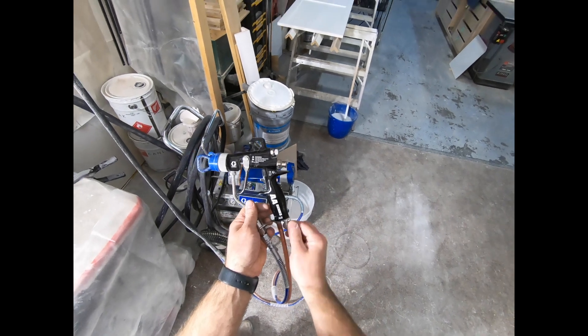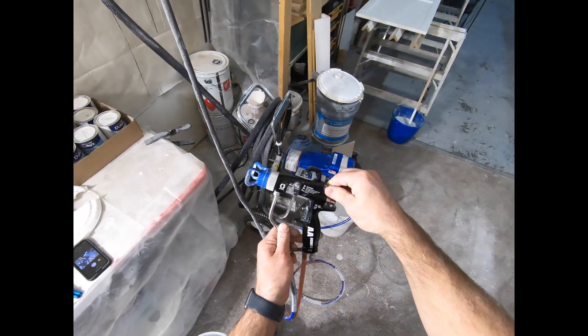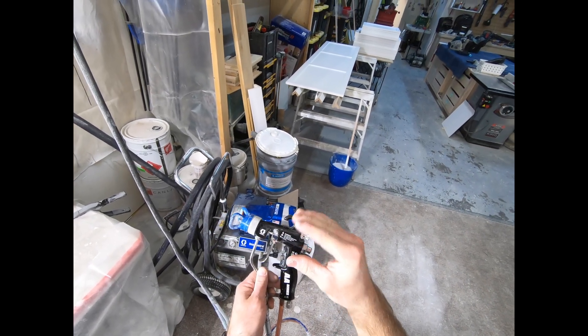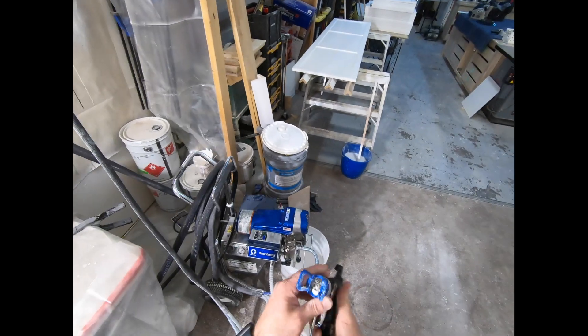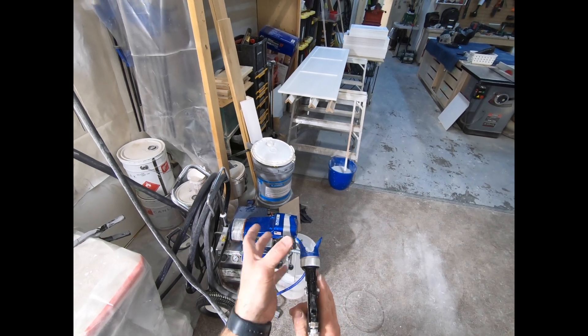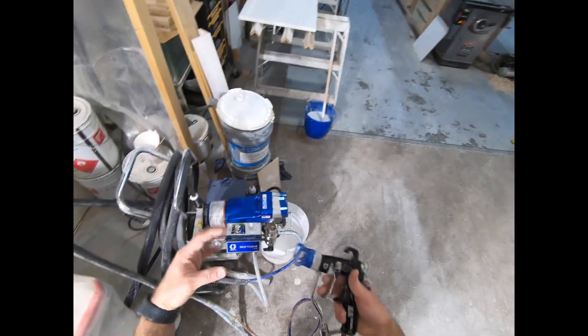Here is your air volume. This is your spray pattern adjustment. To dial it out is to make your spray pattern smaller. If you go like this, it'll make it wider. It just changes the amount of air pushing on the top and bottom of the stream to compress it.